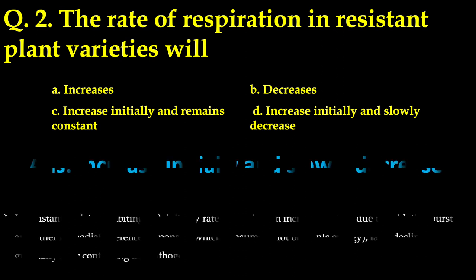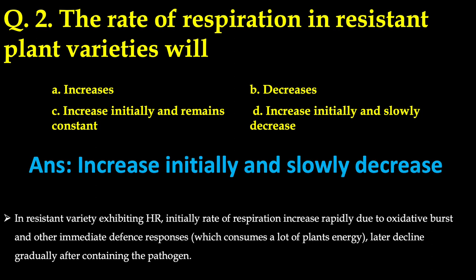The answer is: increase initially and slowly decrease. In a resistant variety exhibiting horizontal resistance, the rate of respiration always increases rapidly due to oxidative burst and other immediate defense responses that consume a lot of plant energy. Later on, it declines gradually after containing the pathogen. So our answer is: increase initially and slowly decrease.